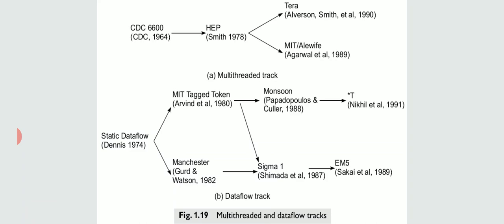The data flow track — instruction-level parallelism — started in 1974. Data flow means not only instructions but data as well will be running in parallel. It initially started with static data flow in 1974. Later we had MIT's project by Arvind and others in 1980, and the Manchester project in 1982, where dynamic data flow was started.